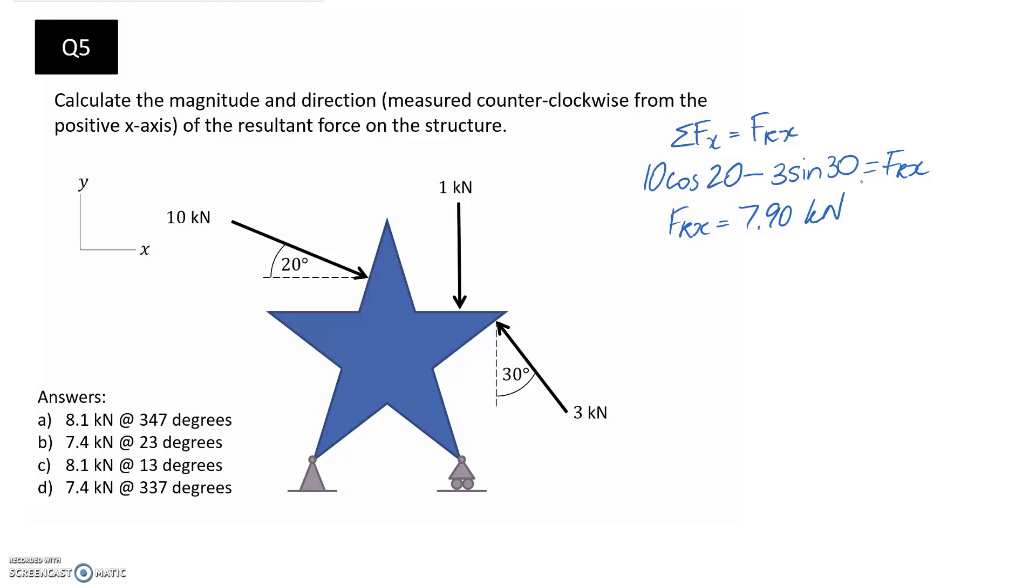So now we need to go through and find the component in the y-direction. And together, these should be able to give us the magnitude and direction. So same process. So this one here, again, has a component in the y-direction. It's going to be the sine component this time. And it's going downwards, so it's going to be negative.